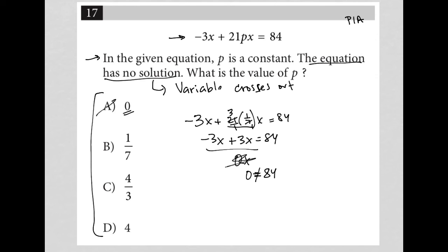And this reminds me of the second part of what we should expect when we have no solution. The variable crosses out, as we saw here, the 3x and the negative 3x. And the remaining is false, which is exactly what we see here. What remains, 0 equals 84, is actually false. 0 does not equal 84. So our correct answer here is choice B.